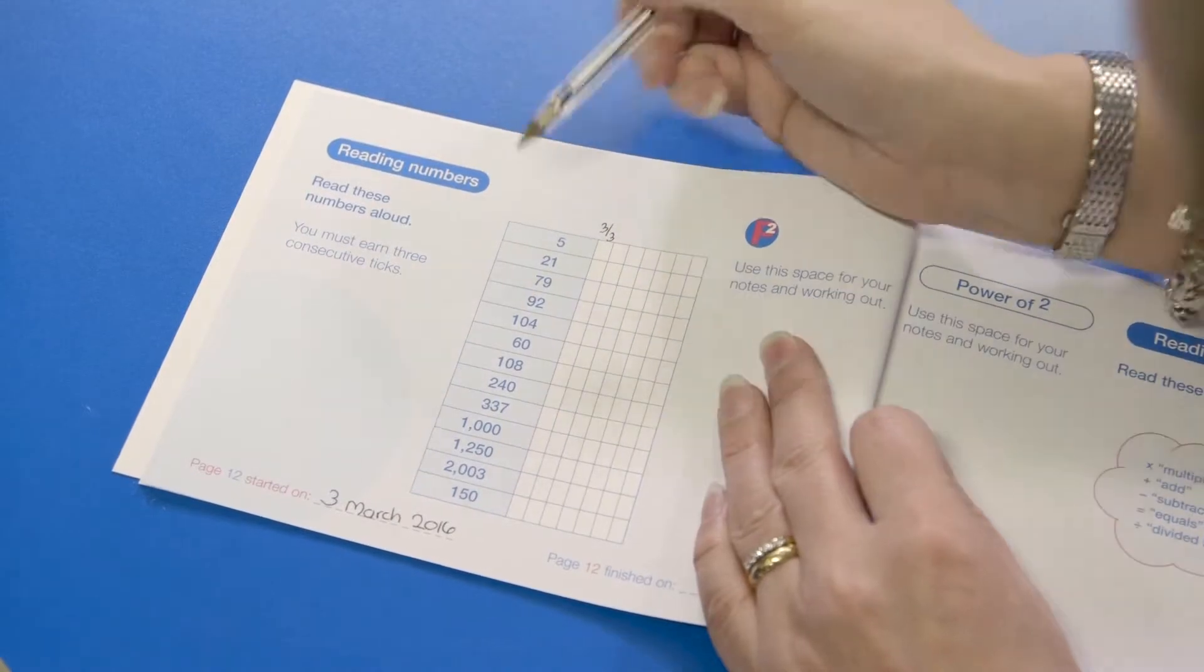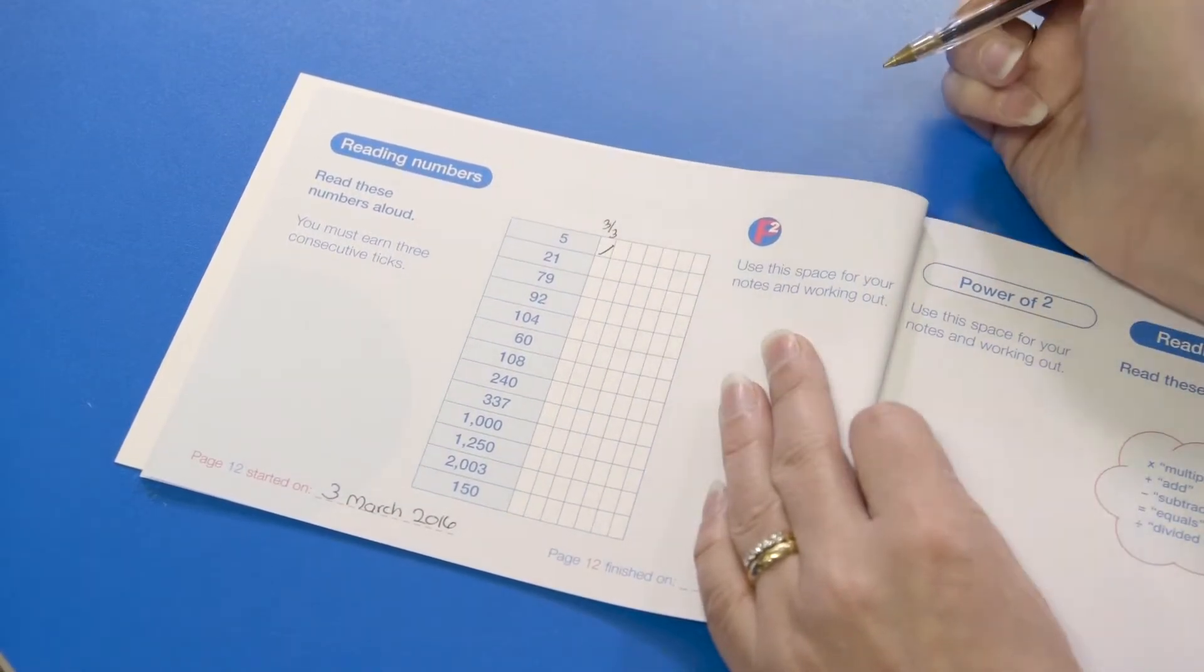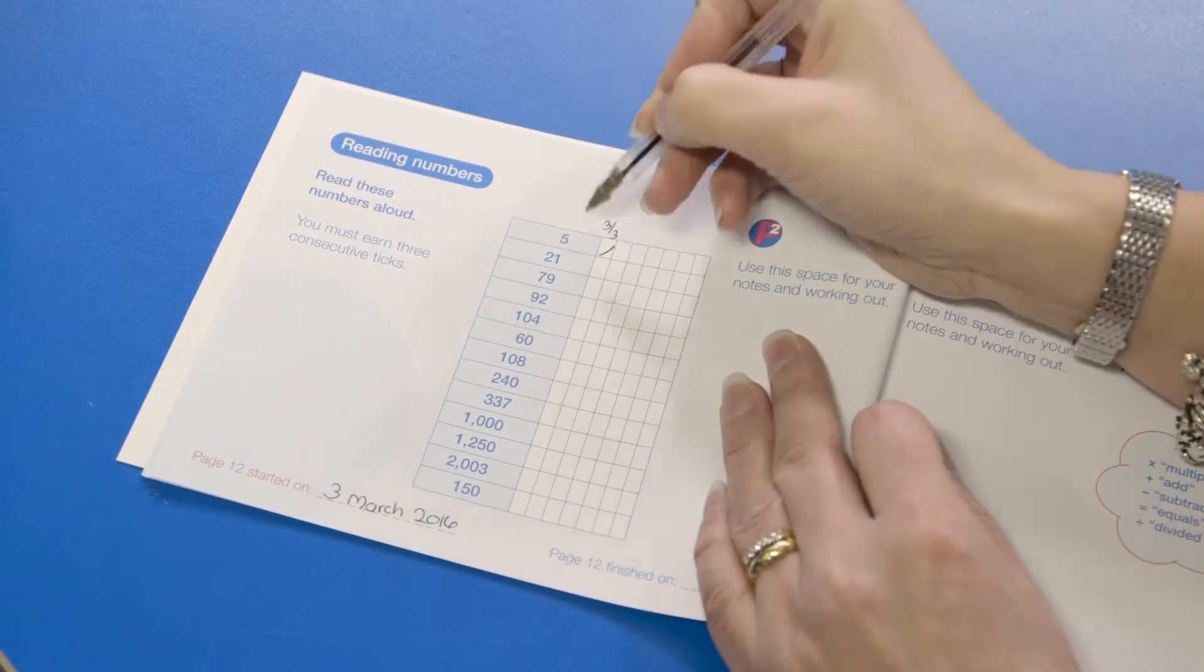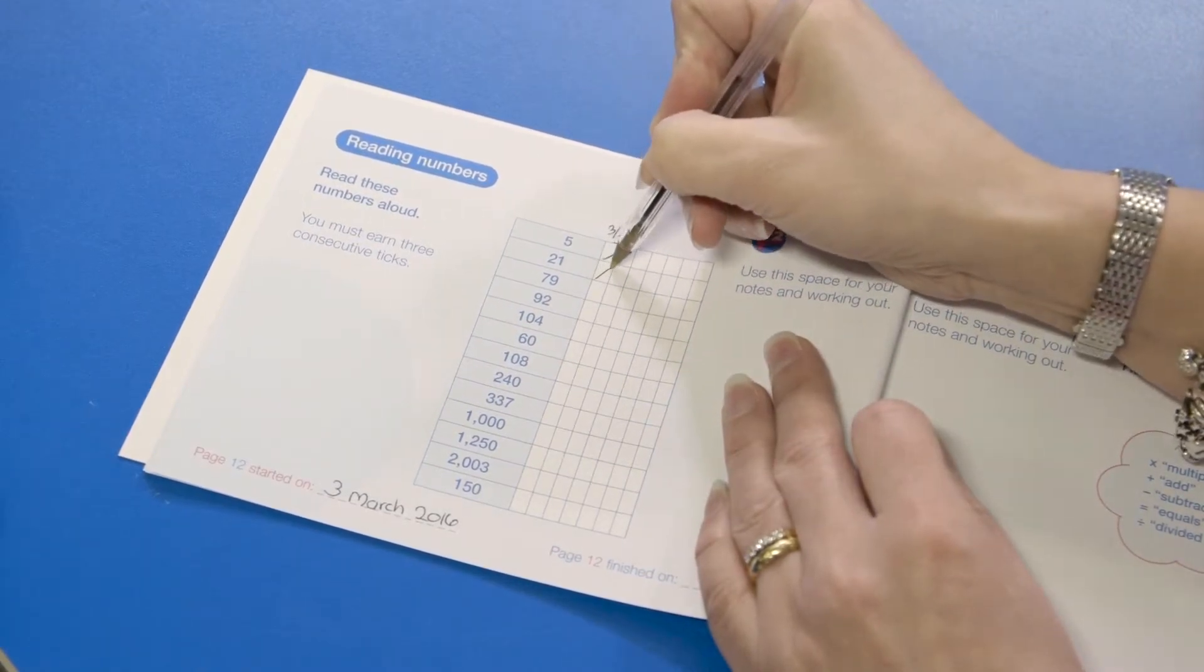You're now ready to start using the book. For each question, if they give a correct answer mark it with a tick. If they give a wrong answer mark it with a dot. Don't write in the actual answer.